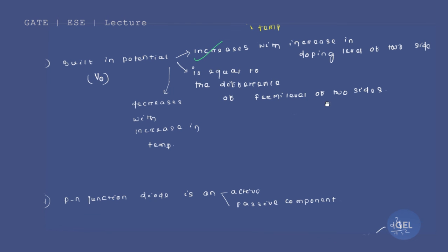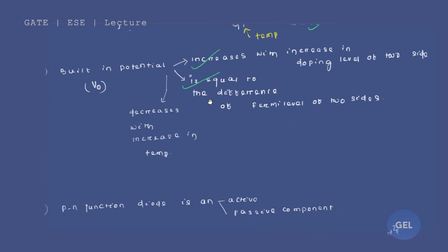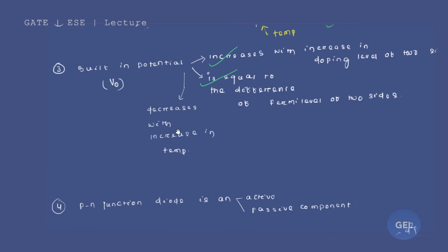Also, built-in potential is always equal to the difference of Fermi levels of the two sides. This is a very important point — it has been asked in M.Tech IIT interviews and Engineering Services exams. Always remember: built-in potential equals the difference of Fermi levels of the two sides. Additionally, built-in potential decreases with increase in temperature. If you increase temperature, the depletion width decreases, and therefore built-in potential decreases.